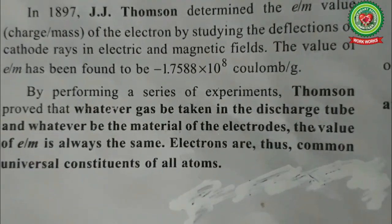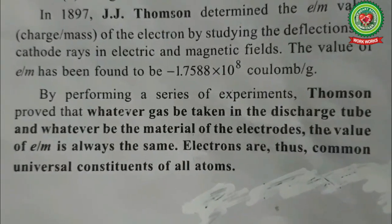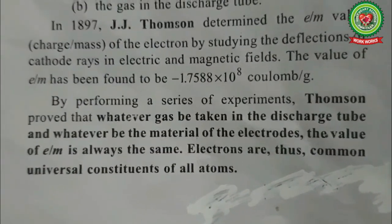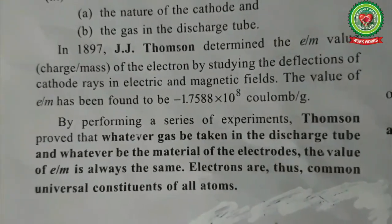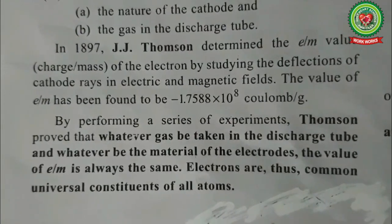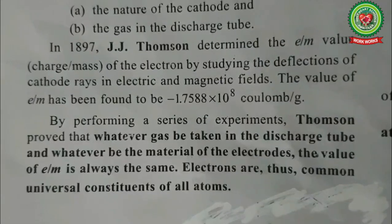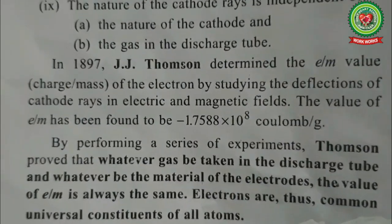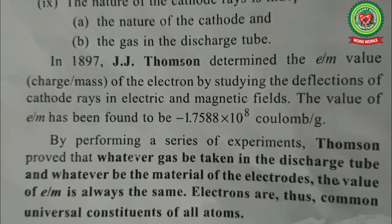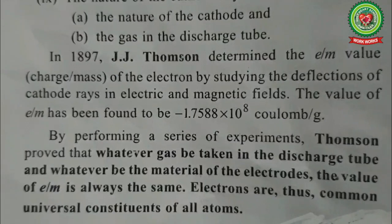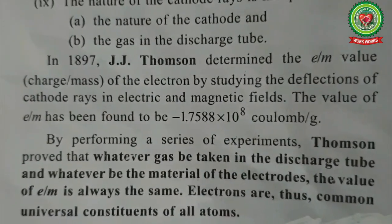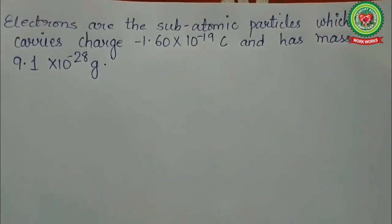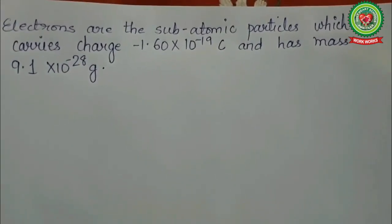J.J. Thomson determined the charge-to-mass ratio of the electron while performing magnetic and electric field experiments. The value of e/m was found to be −1.7588 × 10⁸ coulombs per gram. Thomson proved that whatever gas is taken in the discharge tube and whatever the material of the electrodes, the value of e/m is always the same. Electrons are thus common, universal constituents of all atoms — atoms always carry electrons.